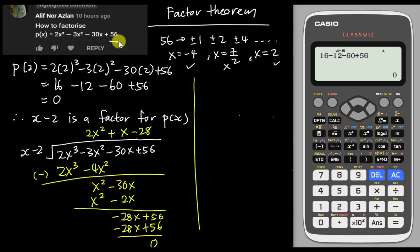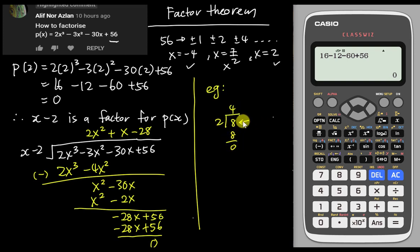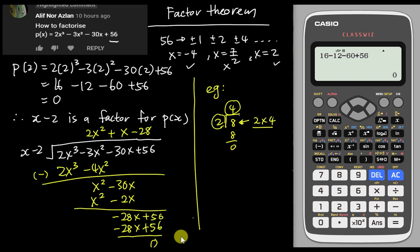Now we know this cubic equation is formed by x minus 2 multiplied by the quotient. Just like 8 divided by 2 equals 4, to get 8 back you multiply 2 by 4. The same idea applies here: to get the original equation, multiply the divisor by the quotient. So p(x) equals x minus 2 multiplied by 2x² plus x minus 28.